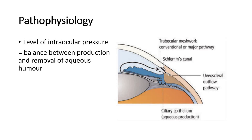The level of intraocular pressure actually depends on the balance between the production and the removal of aqueous humor. This aqueous humor is actively secreted by the ciliary process, secreted into the posterior chamber, and then passes through the pupil into the anterior chamber.